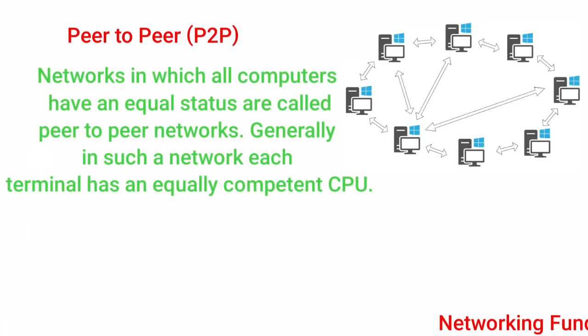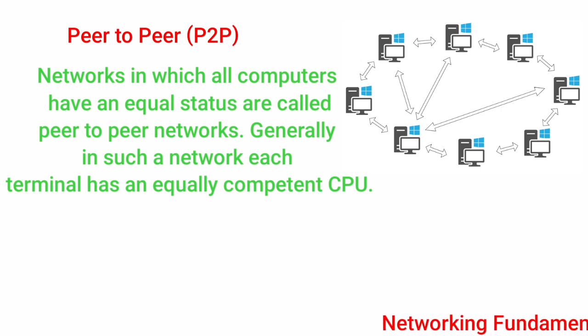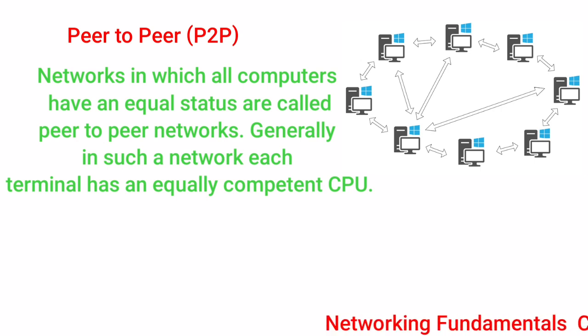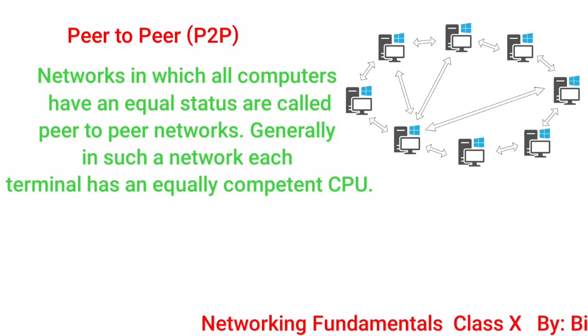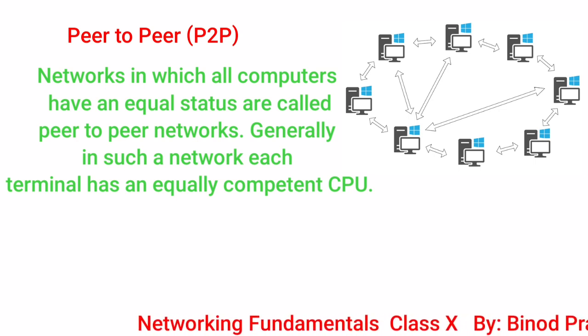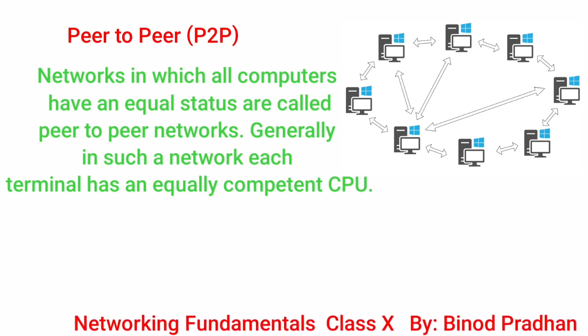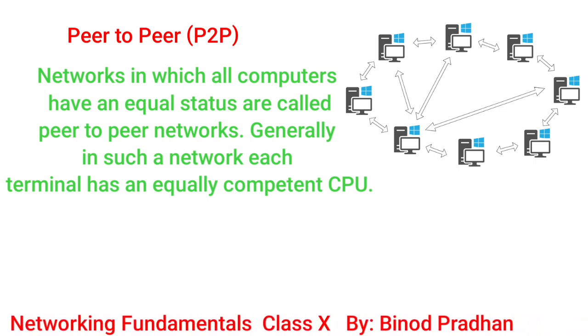Let's understand what is peer-to-peer network architecture. Networks in which all computers have an equal status are called peer-to-peer networks. Generally, in such a network, each terminal has an equally competent CPU.